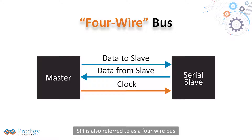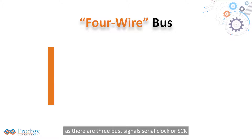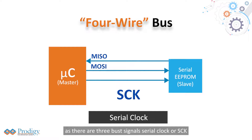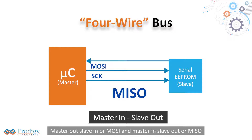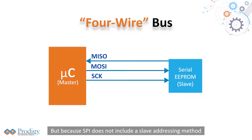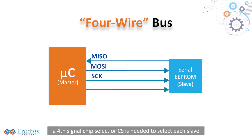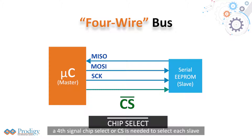SPI is also referred to as a four-wire bus, as there are three bused signals: serial clock (SCK), master out slave in (MOSI), and master in slave out (MISO). But because SPI does not include a slave addressing method in the protocol, a fourth signal, chip select (CS), is needed to select each slave.